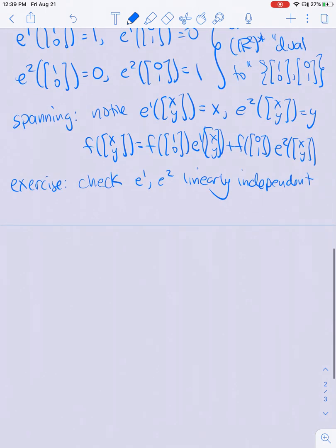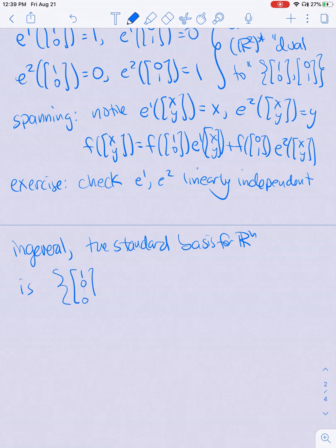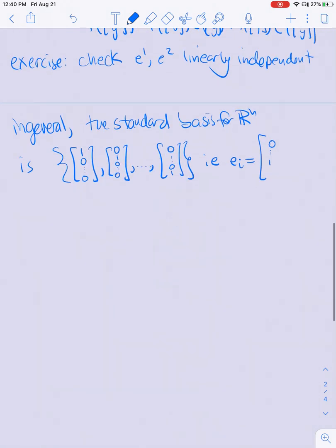So in general, I'm going to consider the standard basis for Rⁿ, which just consists of all vectors which have a single one and the rest of the places are filled by zeros. So Eᵢ, I'm going to define E subscript i is defined as the vector which is all zeros except there is a one in the ith place.